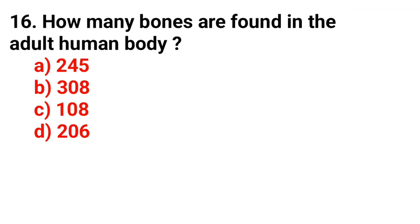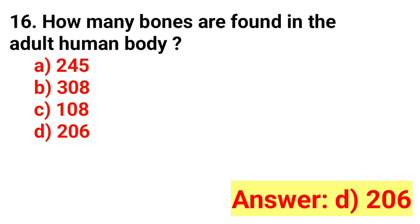Question number 16. How many bones are found in the adult human body? Answer option D: 206.